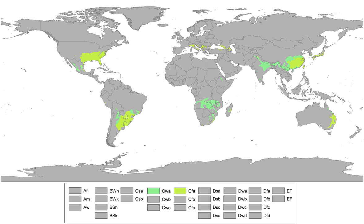Under the Köppen climate classification, CFA and CWA climates are either described as humid subtropical climates or mild temperate climates. This climate features mean temperatures in the coldest month between 0 degrees Celsius (32°F) or minus 3 degrees Celsius (27°F), and 18 degrees Celsius (64°F), and mean temperatures in the warmest month of 22 degrees Celsius or higher.